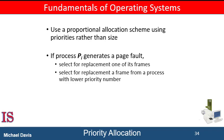In both equal and proportional allocation, the allocation may vary with the multiprogramming level. If the multiprogramming level is increased, each process will lose some frames to provide the memory needed for the new processes. Conversely, if the multiprogramming level decreases, the frames allocated to the departing processes can be spread over the remaining processes. Notice that with equal or proportional allocation, a high-priority process is treated the same as a low-priority process. We may want to give the high-priority process more memory to speed its execution, to the detriment of low-priority processes. One solution is to use a proportional allocation scheme wherein the ratio of frames depends not on the relative size of processes, but rather on the priorities of processes, or on a combination of size and priority.